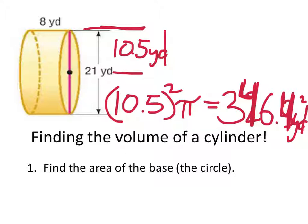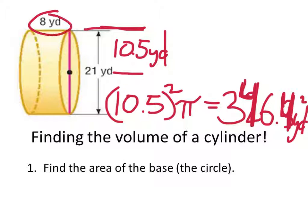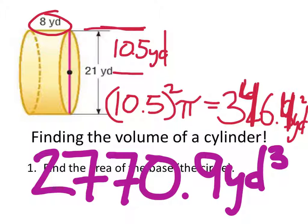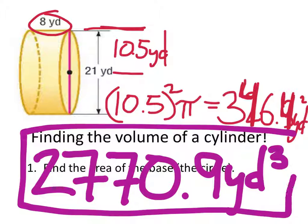Now, what do we do with this three forty-six point four yards squared? Do you multiply your area by the height? Yep. There you go. Just get them multiplied by the height of this cylinder. Eight yards. And that'll be two thousand seven hundred and seventy point nine yards cubed. Bam. There it is.